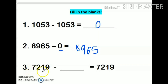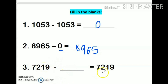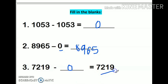Next: 7219 minus ___ equals 7219. I have to subtract something from this number so that my answer remains the same number. So I will subtract 0, so that my answer remains 7219.